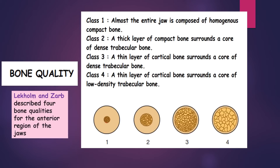On the basis of bone quality, Lecombe and Saab described four bone qualities for the anterior region of the jaws, classified into Classes 1 to 4. In Class 1, almost the entire anterior jaw is composed of homogeneous compact bone. In Class 2, there is a thick layer of compact bone surrounding a core of dense trabecular bone. In Class 3, a thin layer of cortical bone surrounds a core of dense trabecular bone. And Class 4, a thin layer of cortical bone surrounds a core of low-density trabecular bone.